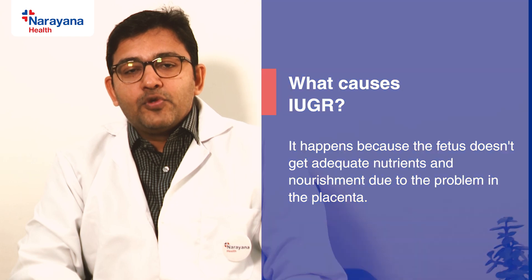It can be because of two reasons. The placenta is a tissue from which the baby gets nutrition and oxygen, and the umbilical cord transfers blood from the placenta to the baby. Any problem in the placenta and the umbilical cord can lead to IUGR in the baby.